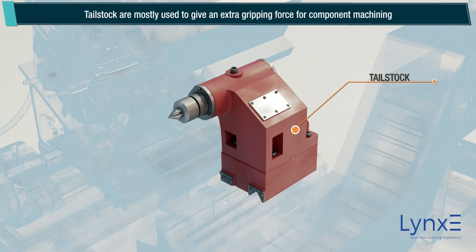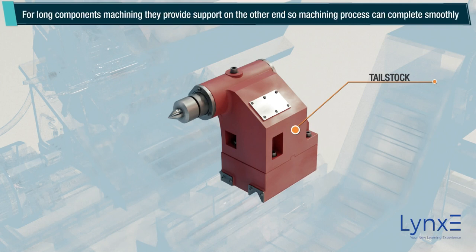Tailstock: tailstocks are mostly used to give an extra gripping force for component machining. For long components, machining they provide support on the other end, so the machining process can complete smoothly.